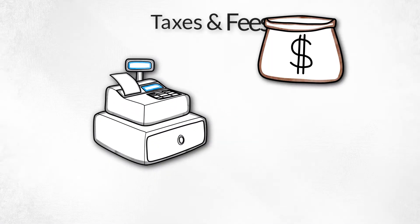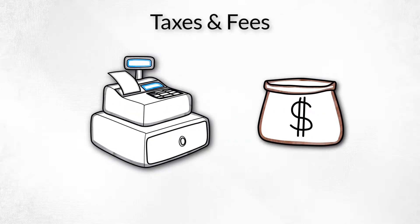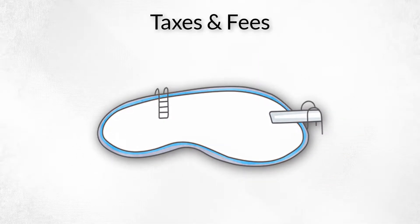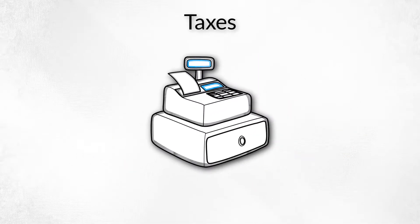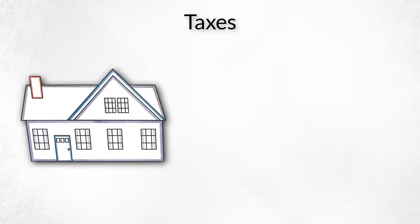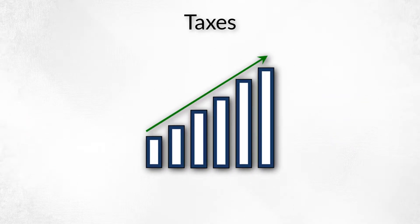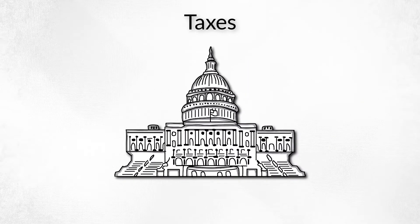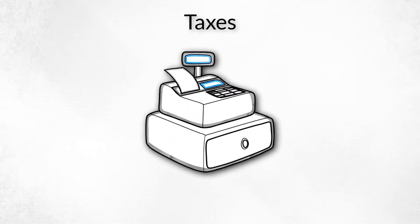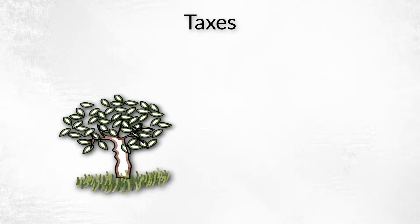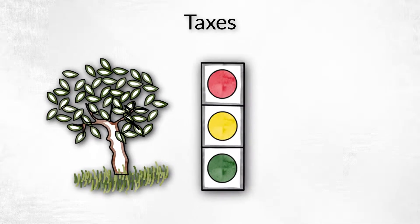What's the difference between taxes and fees? The main difference is how their revenues are used. The primary purpose of a tax — such as a property, sales, or income tax — is to raise government revenue for general government purposes. Tax revenues are used for all sorts of government expenditures, such as parks, streetlights, and police.